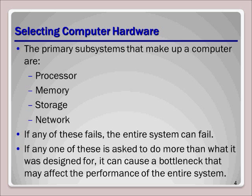Before we discuss software, we should give a brief overview of the hardware that the system will run on. This section divides the system into four major subsystems: processor, memory, storage, and network. By reviewing these subsystems, we can see how these components affect the overall stability and performance of Windows, and it will lead into a later lesson that discusses troubleshooting hardware devices.